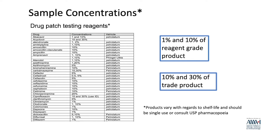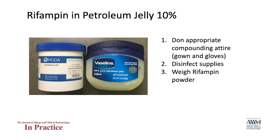Several references exist for sample concentrations of patch tests, validated in controls to find the highest non-irritating concentration that can be compounded. Generally, it is not possible to compound and use more than a 30 percent concentration in petrolatum. When testing a drug for the first time, a general rule is to use one percent and ten percent of reagent-grade drug, or ten percent and thirty percent of the trade product.